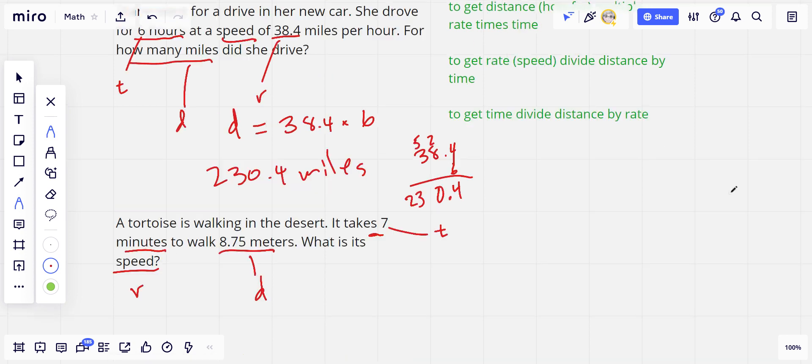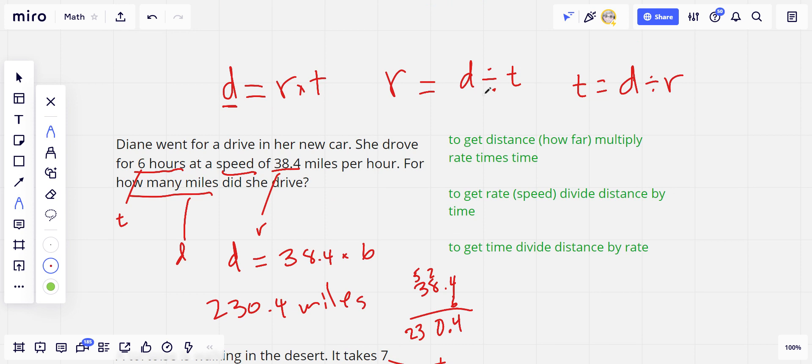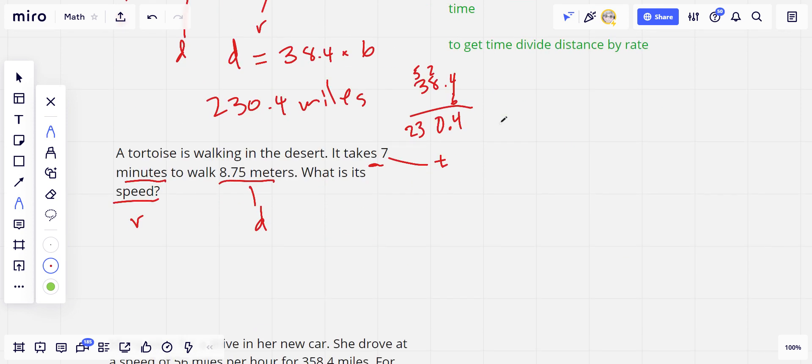Now there's a couple of ways you can think about this. You can go back up here and say rate is distance divided by time, and just plug those things in. Another way to think about this is speed. Often when we're talking about cars in the United States, we think of miles per hour. But it's distance per time unit.